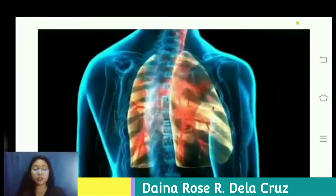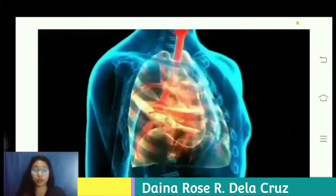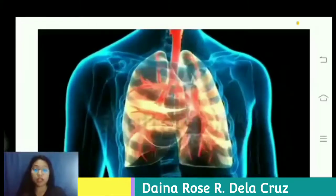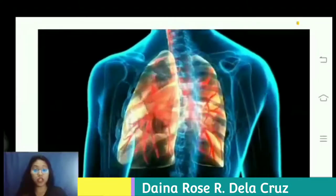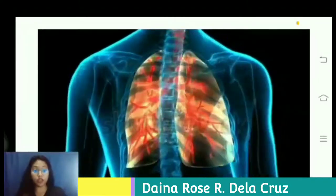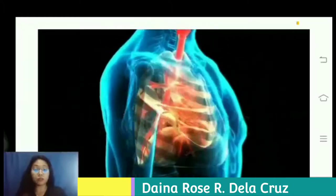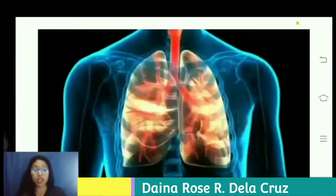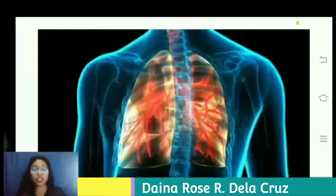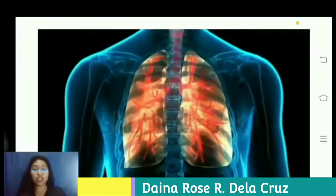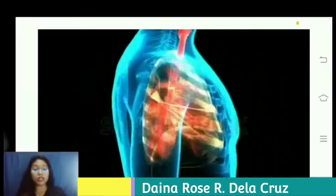Our respiratory system consists of all organs in our body that are involved in breathing. The main function of our respiratory system is to transport air into and out of our lungs, protecting our body from any inhaled particles that can harm it, and most importantly, the exchange of oxygen and carbon dioxide inside our body — which also means breathing.